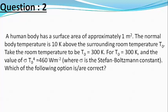A human body has a surface area of approximately 1 meter square. The normal body temperature is 10 K above the surrounding room temperature T0. Take the room temperature to be 300 Kelvins. For T0 equals 300 K, the value of sigma into T0 raised to power 4 is 460 watts per meter square, where sigma is the Stefan-Boltzmann constant. Which of the following options is or are correct?